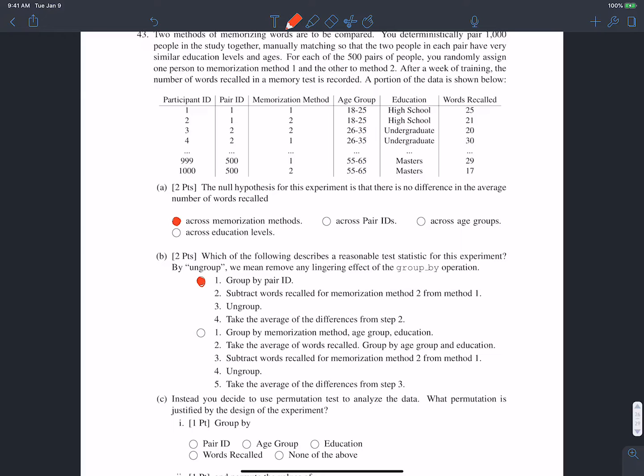OK, the second option is not correct because we're not trying to find anything particular regarding age group and education, right? What we're trying to do is given that someone's age or two people's age group and education are the same, what's the difference in their number of words recalled in these two different memorization methods, which is why we're grouping by pair ID, because we've already implicitly sorted people by age group and education.